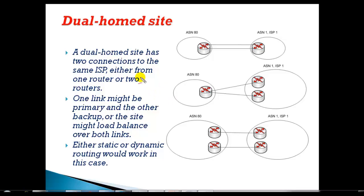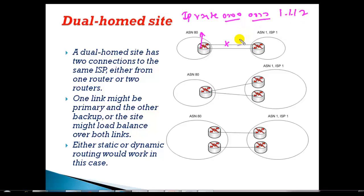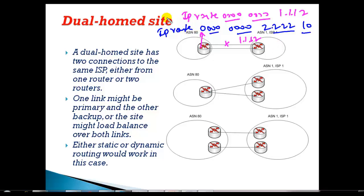The second connection type is the dual homing environment, which is more common in companies not running BGP. We generally have two links connecting to service providers. The advantage is redundancy: if any one link fails, we configure two default routes — one pointing to 1.1.1.2 and another to 2.2.2.2 with a higher administrative distance. By default it uses the first link; if that primary link fails, it uses the second link.